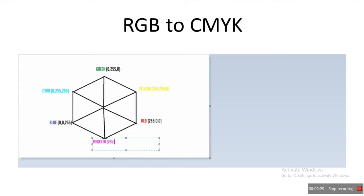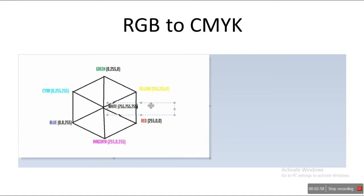So this is known as the CMYK color model — that is cyan, magenta, yellow, and K. K is the value of brightness. So we have written white — that is, we have got all three colors in white: red, green, and blue, we get white. So it is 255, 255, 255. K means the brightness value, which is also known as white or black. This is how we get the CMYK model from RGB.